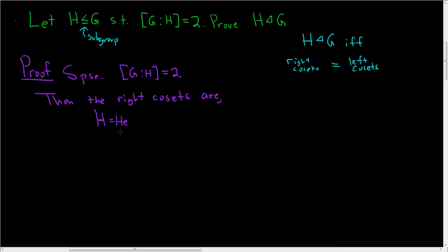And since the cosets partition G, their union has to be equal to G and it has to be disjoint. So the other coset is G set minus H, right? Because if you take the union of these two guys, you get G.